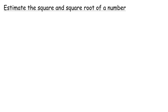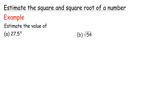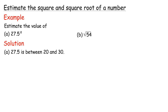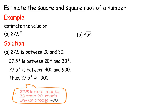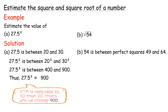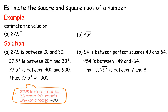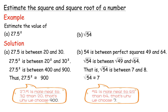Estimate the square and square root of a number. If we do not have a calculator and want to roughly know the value, we estimate. Example: Estimate the value of A: 27.5 squared, B: Square root of 54. Solution A: 27.5 is between 20 and 30, so 27.5 squared is between 20 squared and 30 squared, which is between 400 and 900. Thus, 27.5 squared is approximately 900. B: 54 is between perfect squares 49 and 64. Square root of 54 is between square root of 49 and square root of 64, that is, between 7 and 8. Thus, square root of 54 is approximately 7.